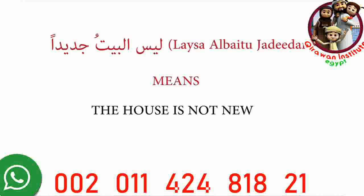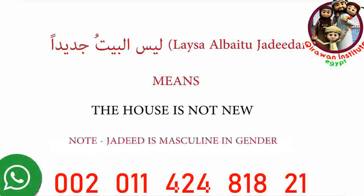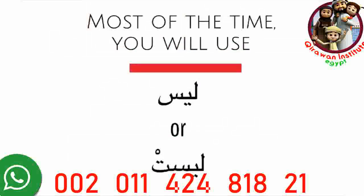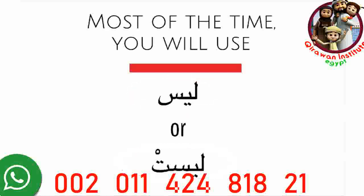You'll notice that the spelling of the word jadid also changes. We add an aleph to the end of the word and then tenwin fetah, because jadid is masculine in gender and is now in the accusative case. In part one, after learning the conjugation of leysa, we learned that most of the time you'll only use leysa or leysit. Now you're going to find out why.